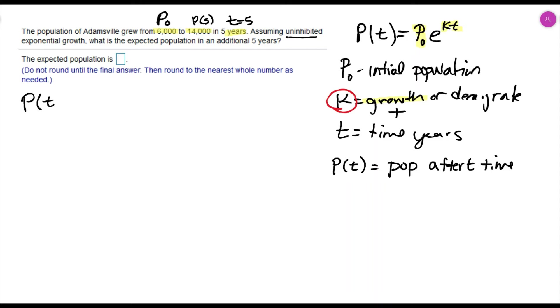We take our formula, P(t) equals P naught e to the kt. For P(t), that's going to be P(5), that's 14,000.